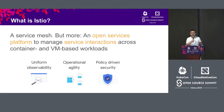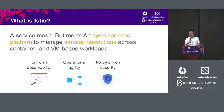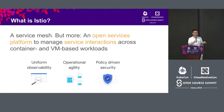Istio is mostly known as a service mesh. To be more specific, it's an open service platform to manage service interactions across workloads running from everywhere — Kubernetes, VM, on-prem, public cloud. It solves three major problems for service communication. First, observability. It provides you uniform visibility into what's happening to your service, who is accessing your service, what's the latency, what's the error rates, which method is called.